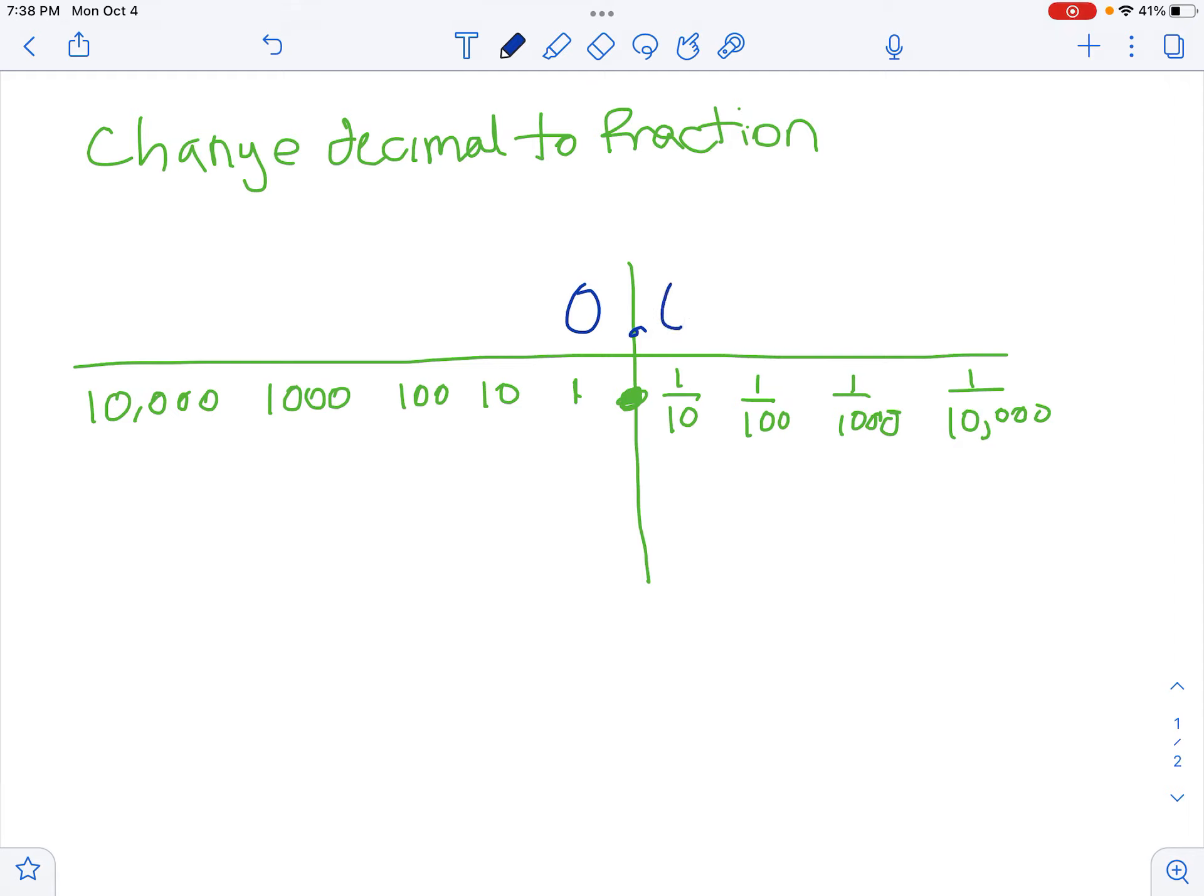If I were to write, put a 0 here, then the 4 is in the hundredths place, that's the hundredths place, that would be 4 hundredths. So I would write that as 4 hundredths. I would write that fraction as 4 over 100.